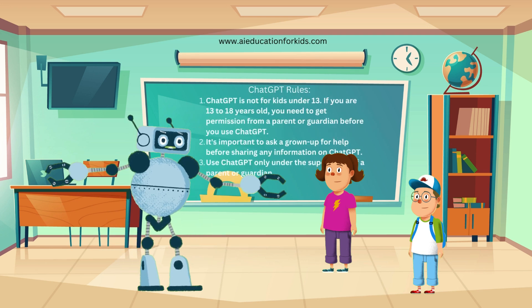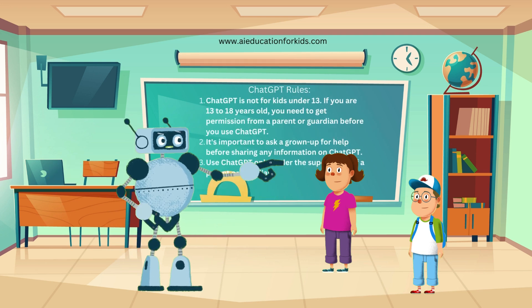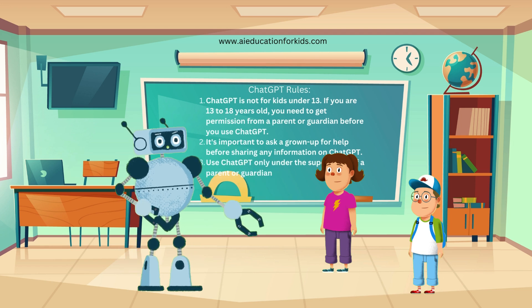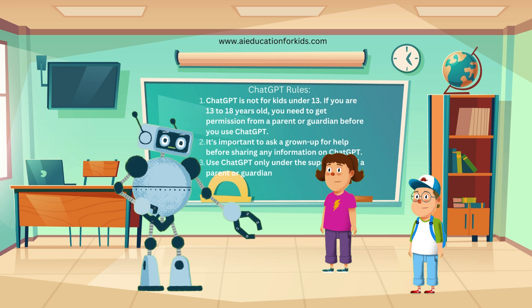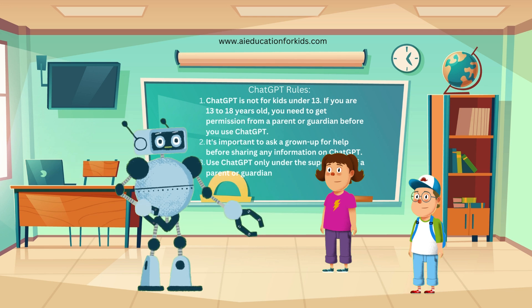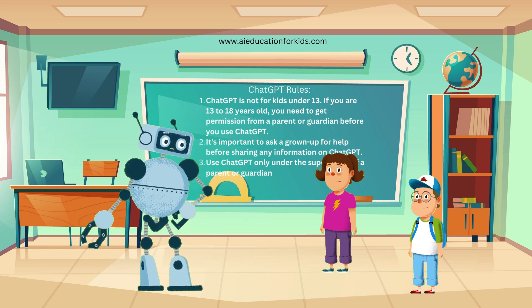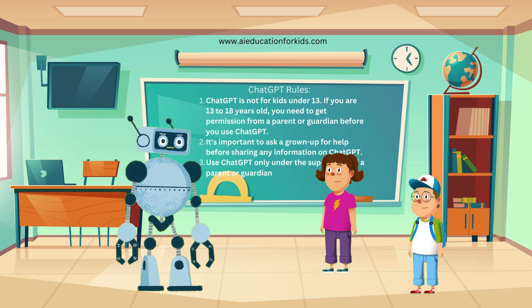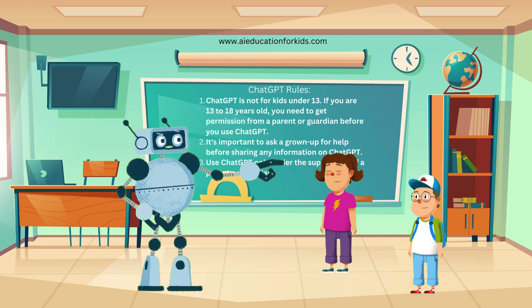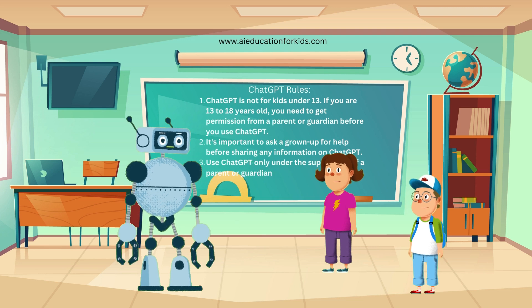It's important to ask a grown-up for help. Before you create an account, you'll need to share some personal information. It's very important to ask a parent or guardian to help you with this step. They can help to keep your information safe. For AI safety guidelines, check out the video link in the description below before you proceed further. Please remember, a parent or guardian should take care of all the following steps for creating an account for you.